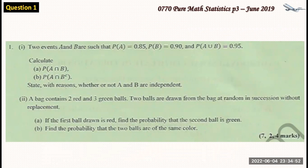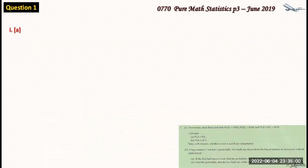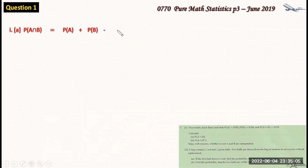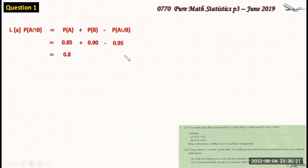Calculate the probability of A intersection B. The probability of A intersection B complements. So the probability of A intersection B will be equal to the probability of A plus probability of B minus the probability of A union B. And this gives us 0.85 plus 0.90 minus probability of A union B which is 0.95 and the result is 0.80.